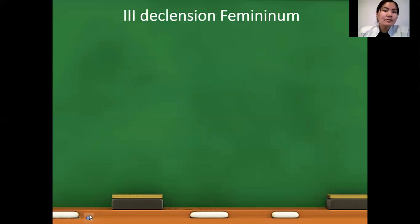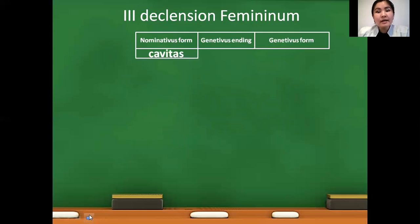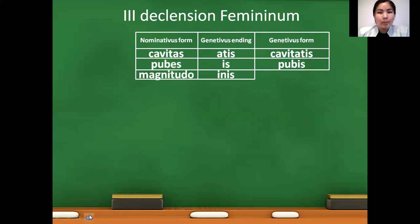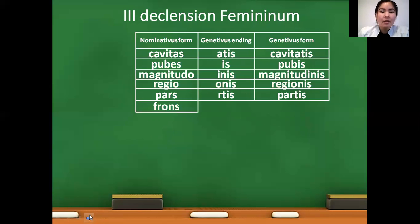In the case of third declension feminine nouns: cavitas, genitive ending we use -atis — cavitatis. Pubes — genitive form will be pubis. Magnitudo, the pre-last letter is a consonant, we use -inis — magnitudinis. Regio, we use ending -onis — regionis. Pars uses ending -tis — partis. Frons — genitive form will be frontis.